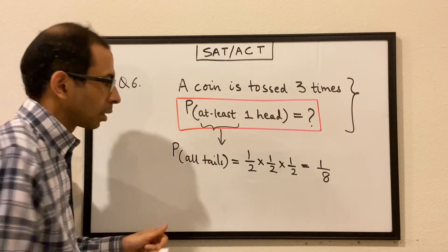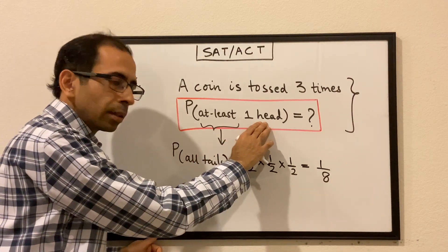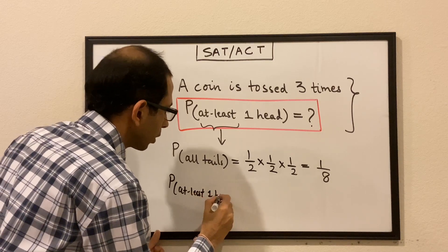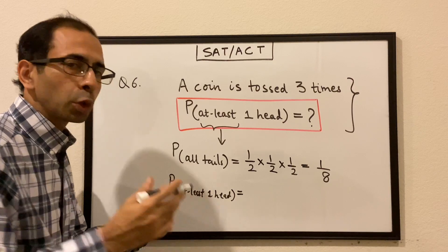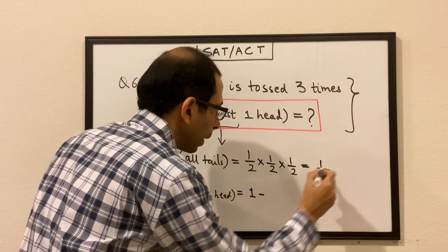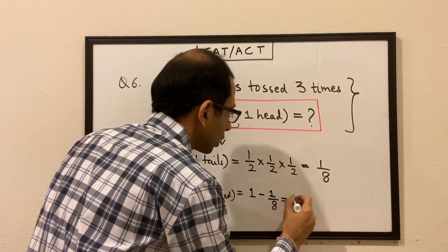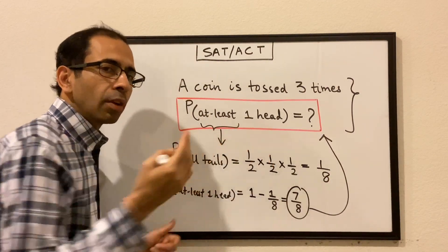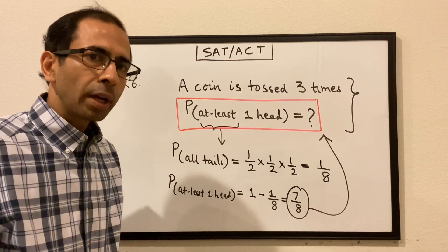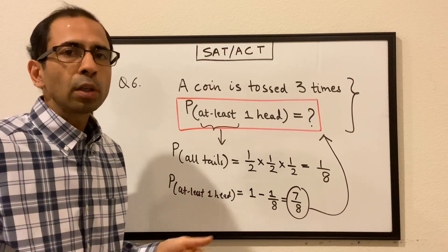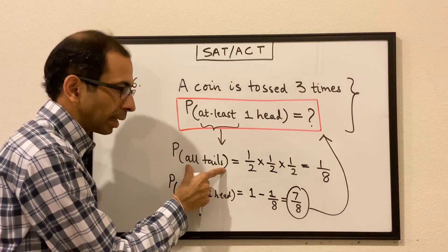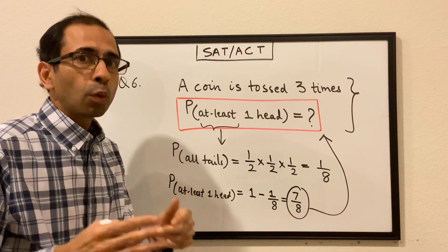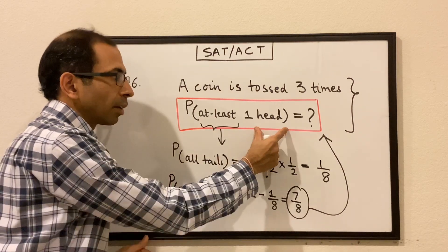All other scenarios will lead to at least one head. So the probability of at least one head is the total probability minus the probability of all tails: one minus one over eight which comes out to be seven over eight. Whenever we are dealing with 'at least' situations, we find the probability of the opposite scenario and subtract it from one, because the total probability of anything happening is one.